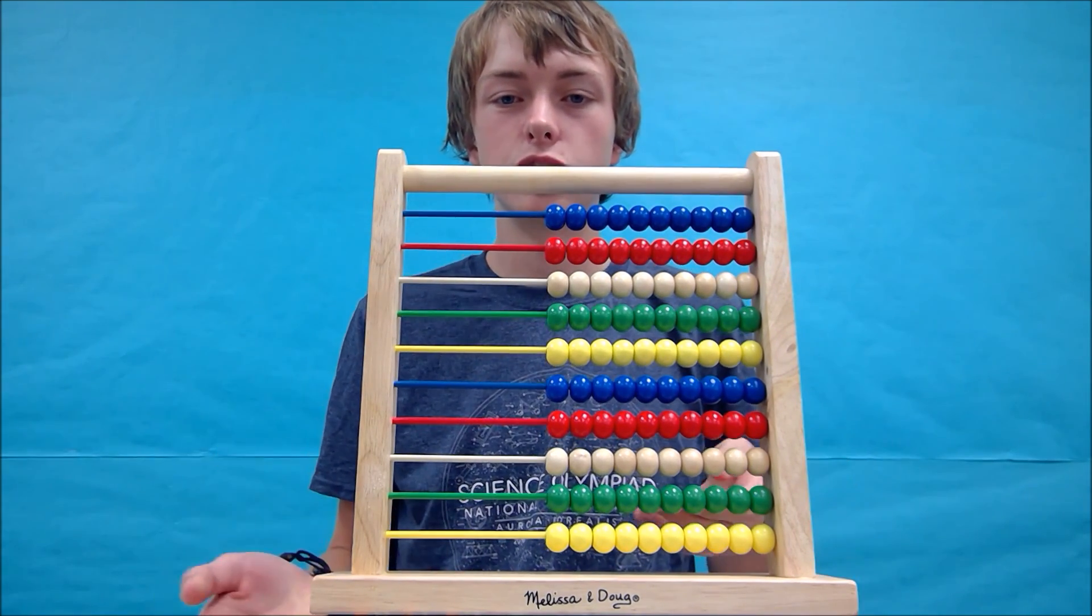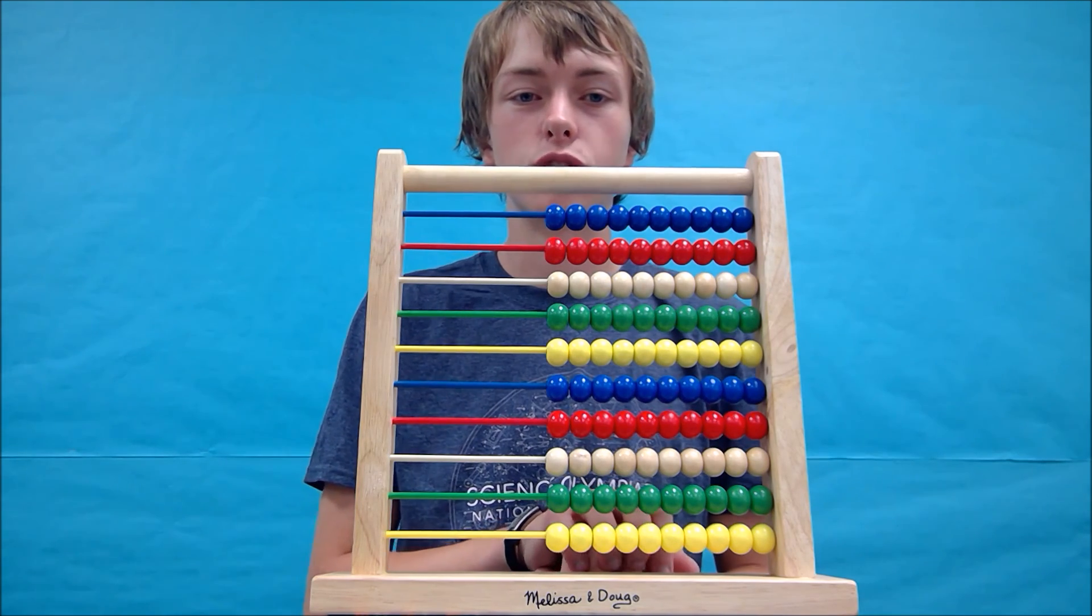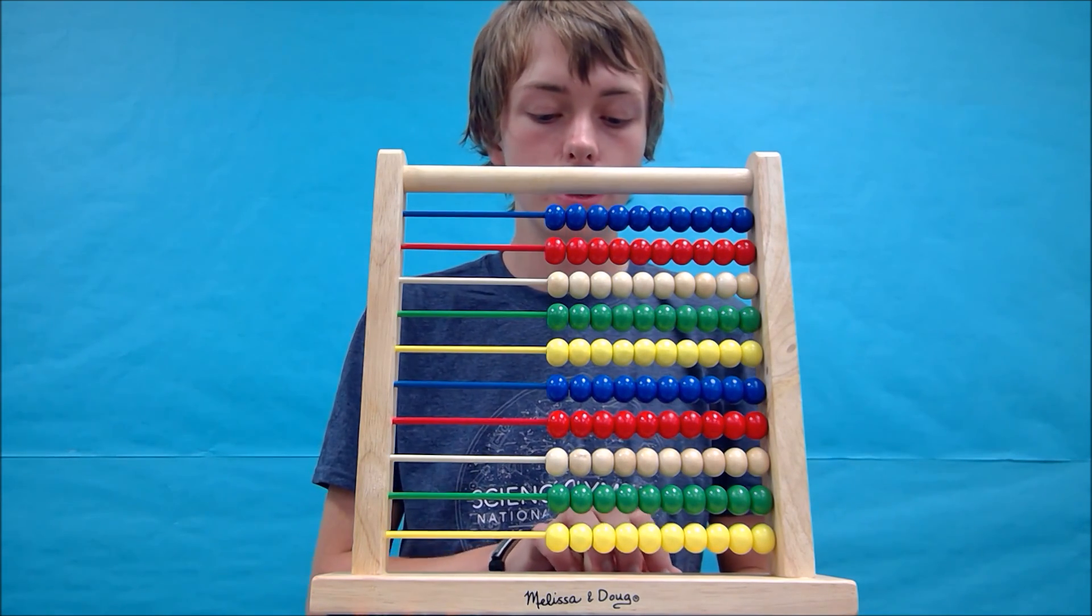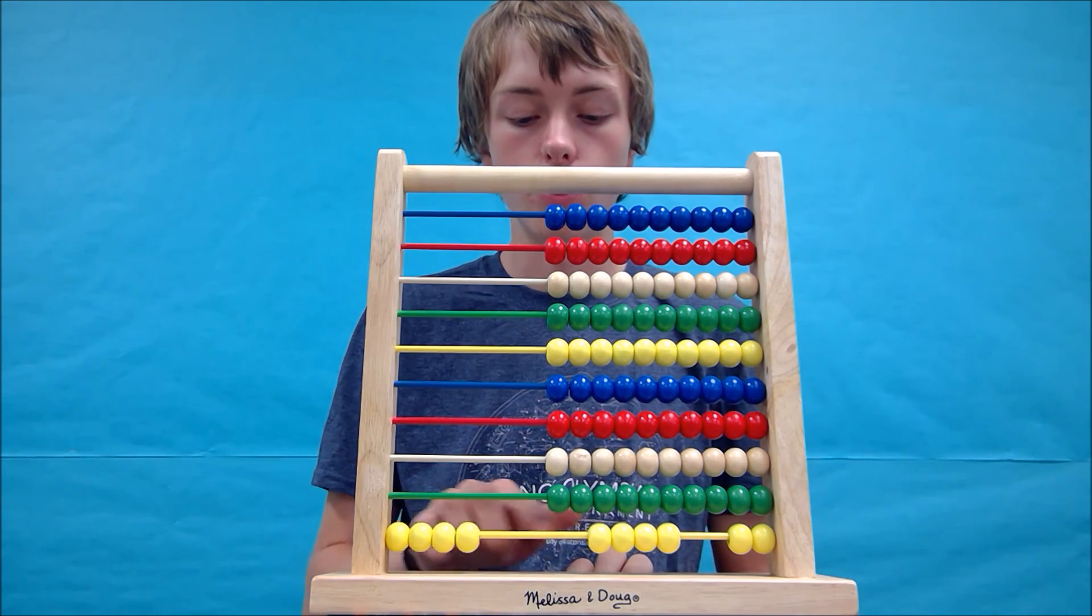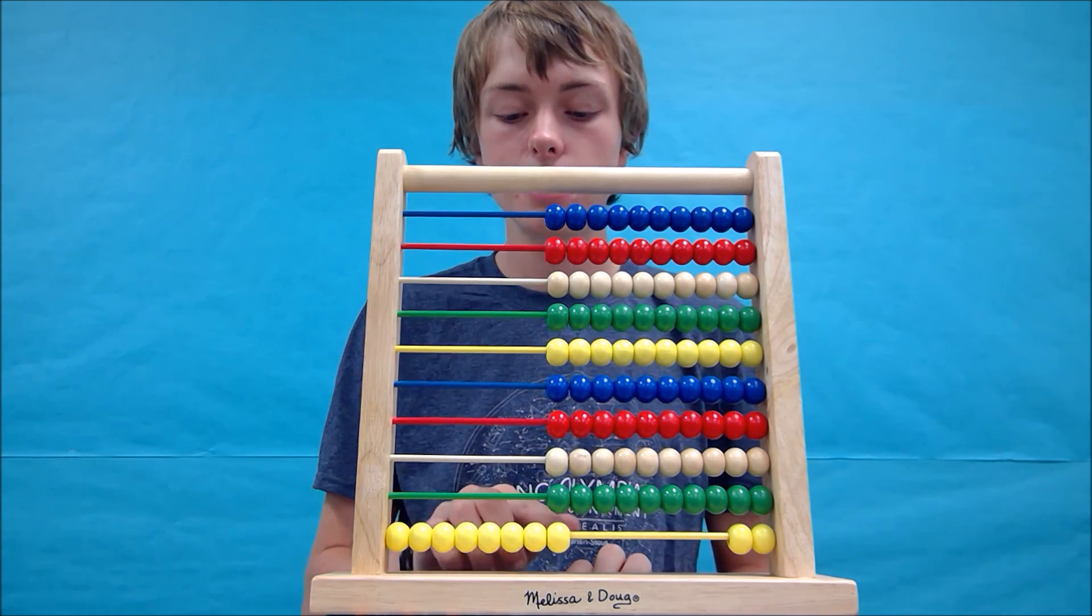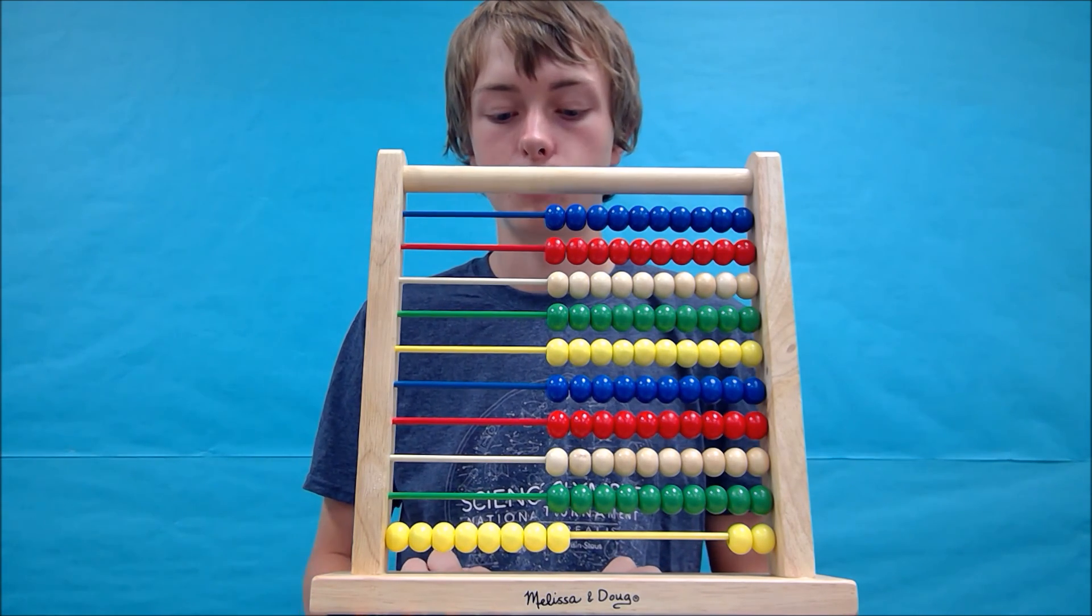So the same as addition, we're going to start by forming the first number. Let's try our first example. We're going to try 8 minus 2. So like addition, we will form the first number: 2, 4, 6, 8. And since we have formed the first number, we will now take away the second number, 2.